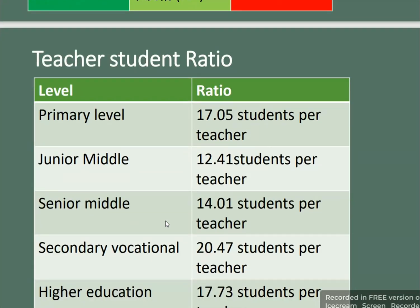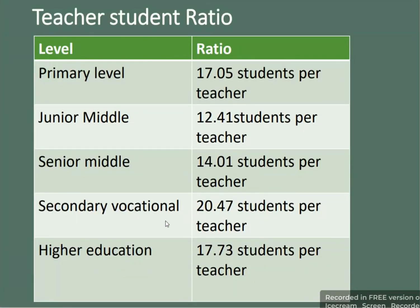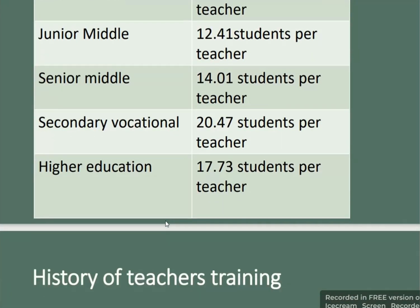The teacher-student ratio by level is: primary level — 17.5 students per teacher; junior middle — 12.41 students per teacher; senior middle — 14.1 students per teacher; secondary vocational — 20.47 students per teacher; and higher education — 17.73 students per teacher.